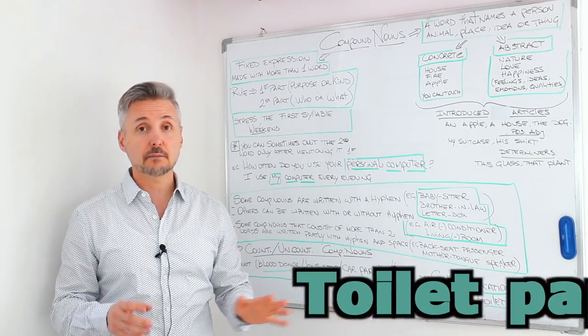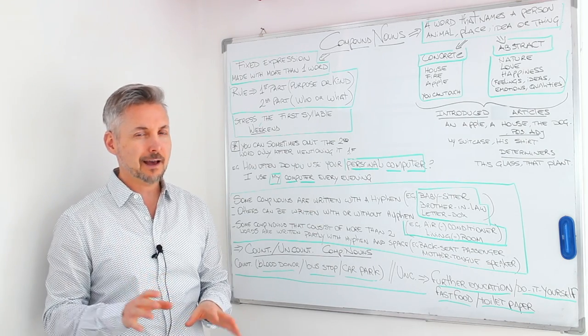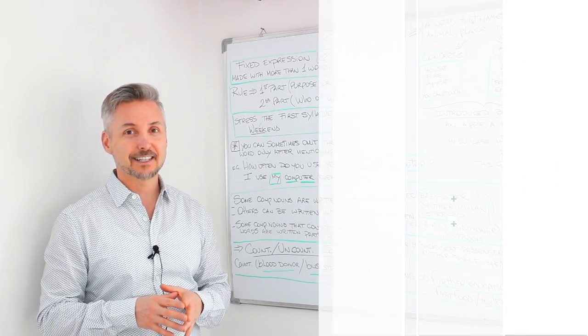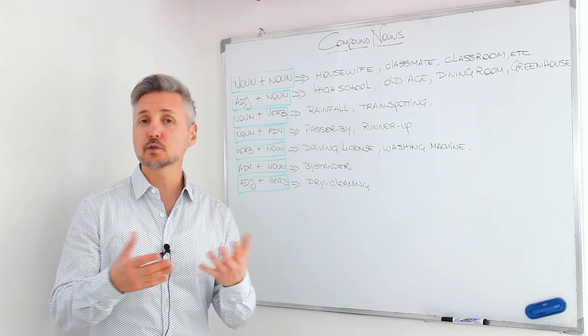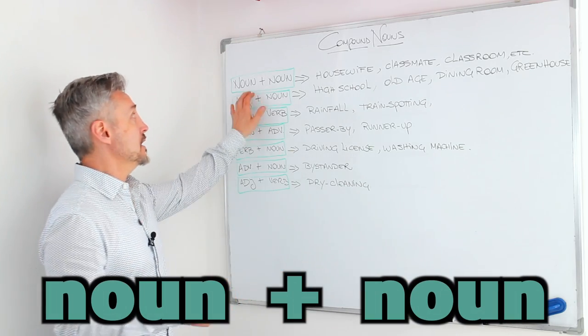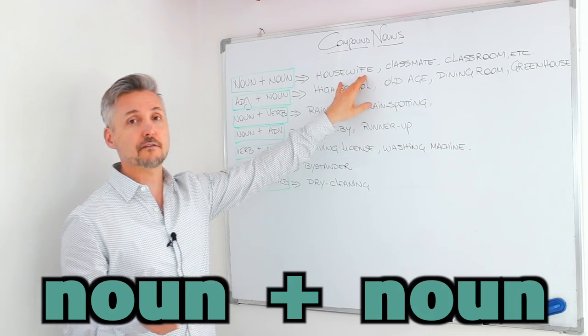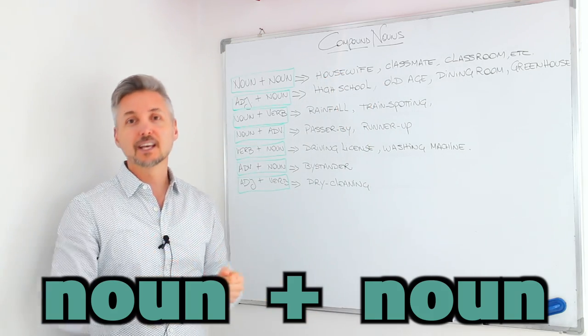Now, I'm going to erase this and I'm going to show you other points about compound nouns. Actually, I think it's the most important point in this lesson. Right, so we're back. Compound nouns are made of two words usually, but sometimes more. They're made up of noun plus noun. For example, housewife, roommate, classroom, etc.